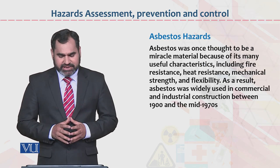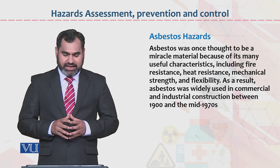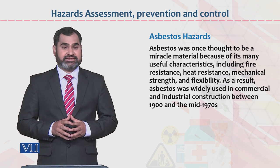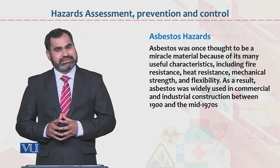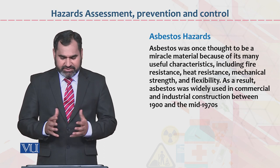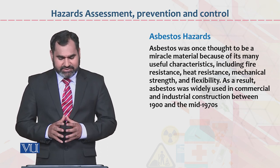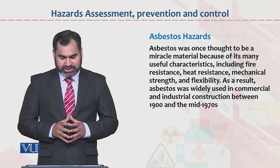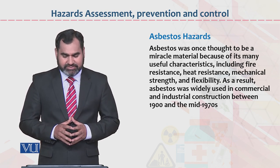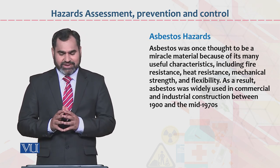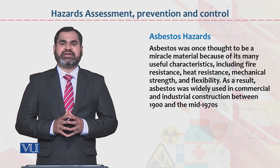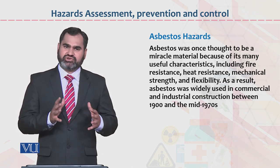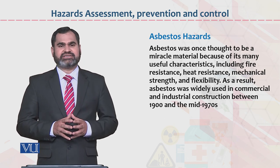Asbestos hazards. Asbestos was once thought to be a miracle material because of its many useful characteristics including fire resistance, heat resistance, mechanical strength, and flexibility. Yeh basically widely used chemical tha jo ki commercial and industrial construction between 1900 and mid-1970s mein use hota raha. In hazards ki wajah se employees ko bhoat zyada problems ka saamna karna pada. Ab wo jo employees hain, wo in ko control karke — kaafi haad tak hazards assessment, prevention and control ki madad se in cheezon ko recover kar rahe hain.